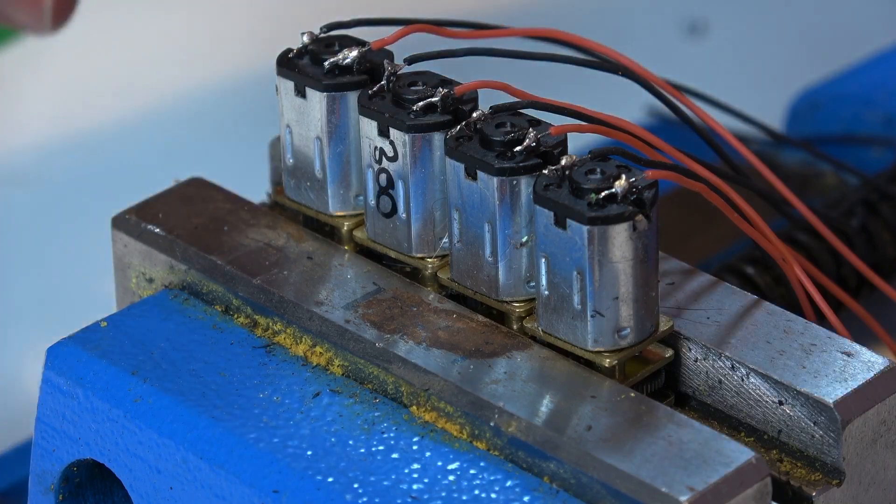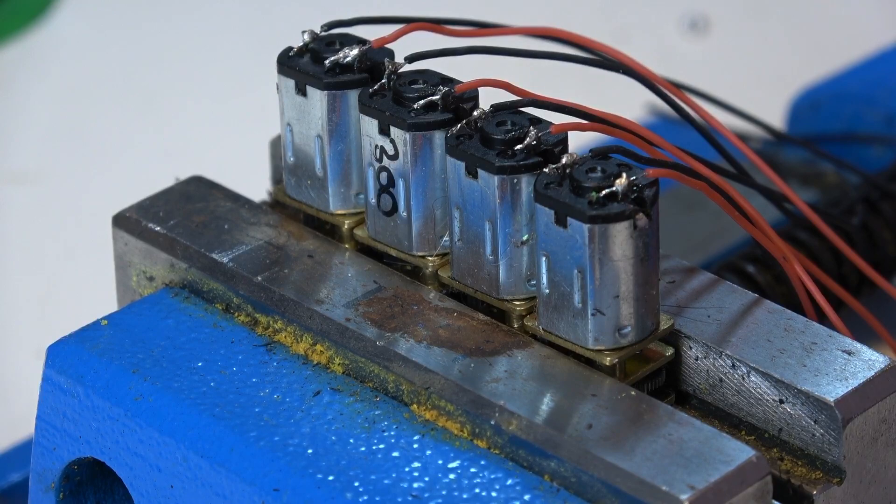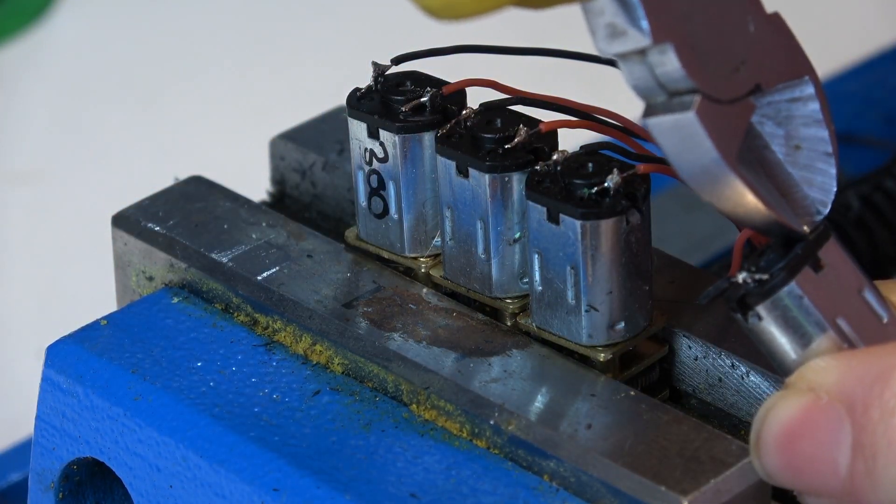Those are all done. If you've got any excess wires sticking out of the bottom, it doesn't do any harm just to trim them because it's fairly tight inside the 3D prints that hold the motors.